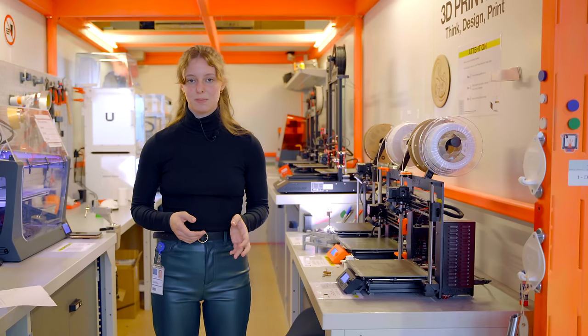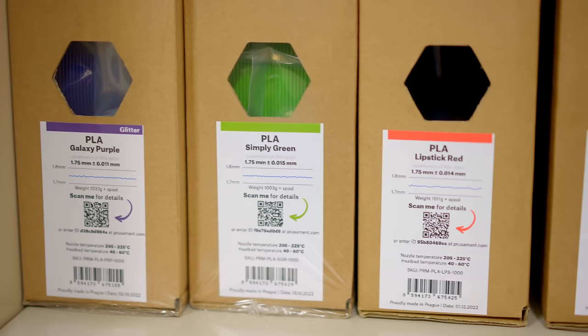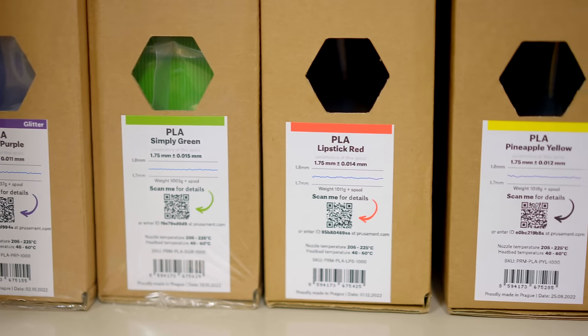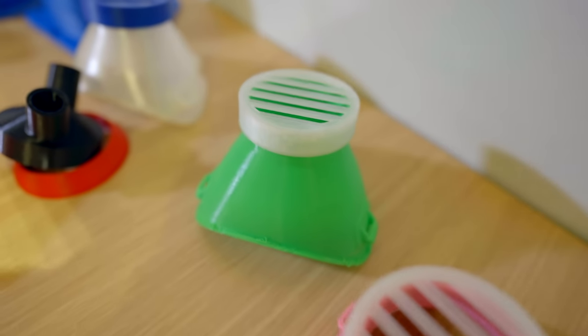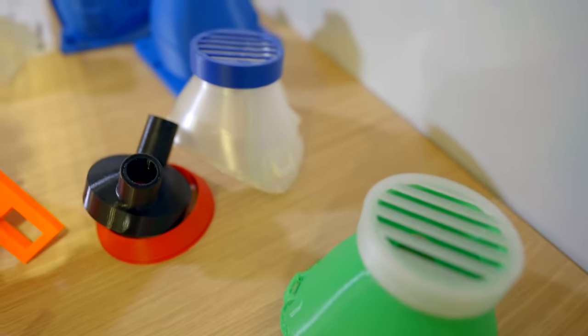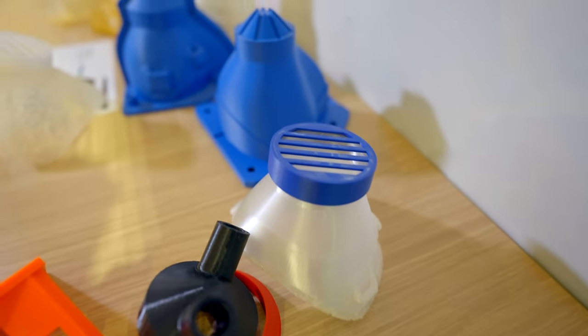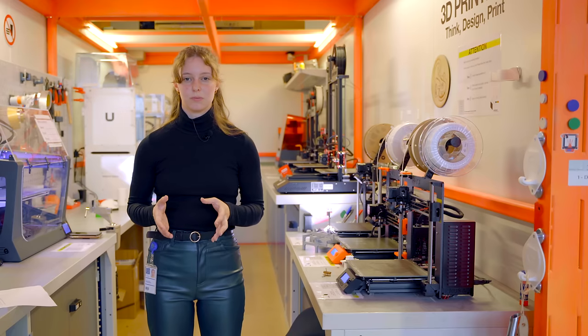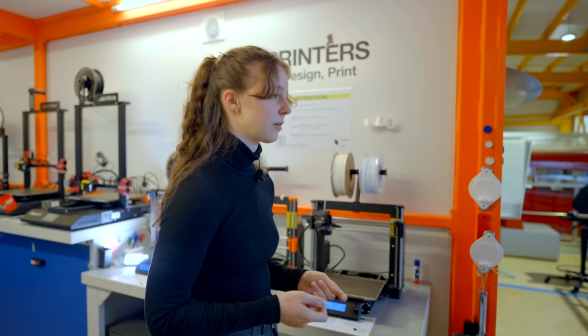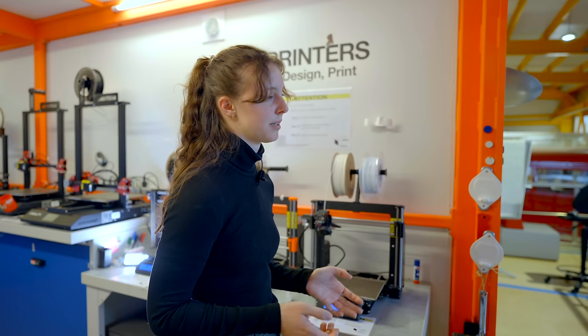For the student prototypes we usually use PLA because it's easy to print with and it's cheap. But if we need prototypes that are in radiation zones we have to use a bit stronger plastics such as ASA for example.